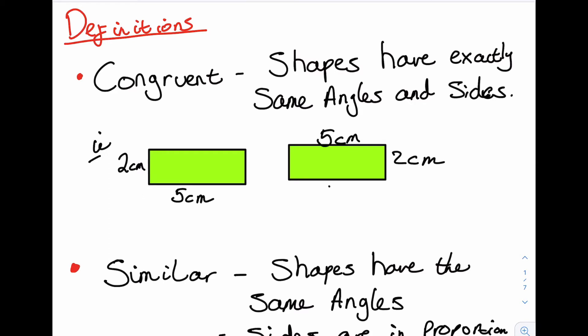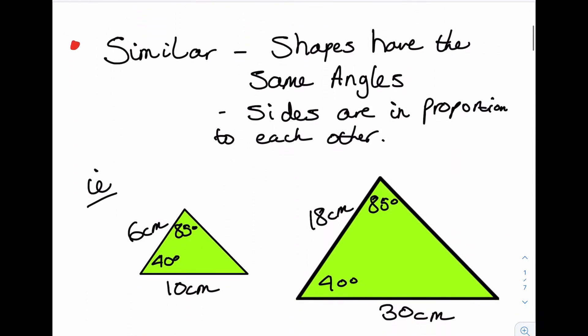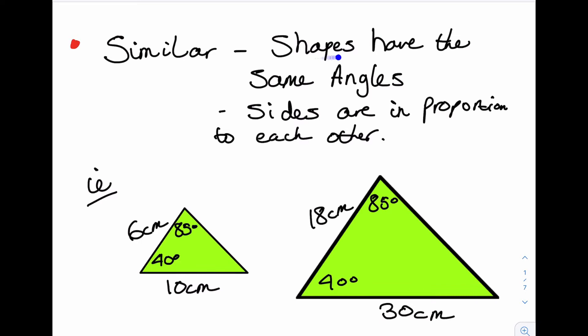Let's look at what we actually want to look at today though. Similar, very similar to congruent. Shapes have the same angles and that means that the sides are in proportion to each other.